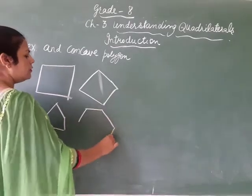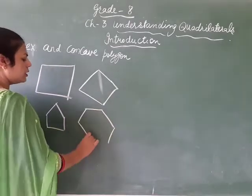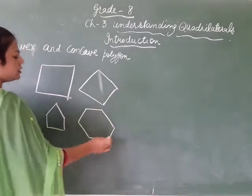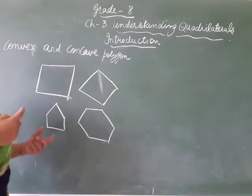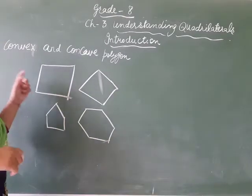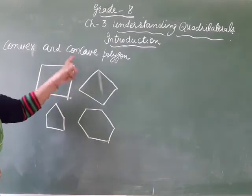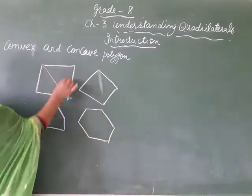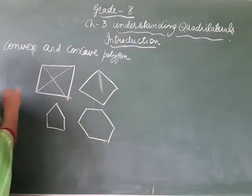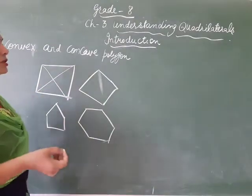These are convex polygons. In these polygons, diagonals lie inside the polygons. When we draw the diagonals, they lie inside the polygons.